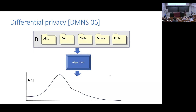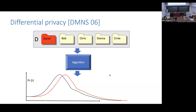This is called differential privacy, and it was defined back in 2006 by Dwork, McSherry, and Smith. I'll note Dwork is now here at Harvard — excellent job hiring her. In pictures, it says this: if I have some particular database D containing data from many people and plug that into my favorite randomized algorithm, I get out a PDF curve of the outputs of this algorithm instantiated on this particular dataset.